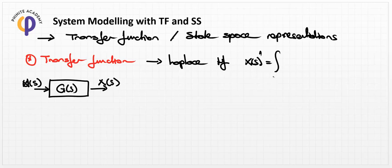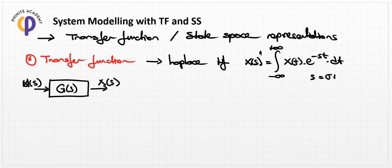In the Laplace transformation, X(s) is equal to the integral of x(t) multiplied by e^(-st). Here, s is the general root of the system containing the frequency component and real component, and we can use it to transform any system from the time domain into the frequency domain.